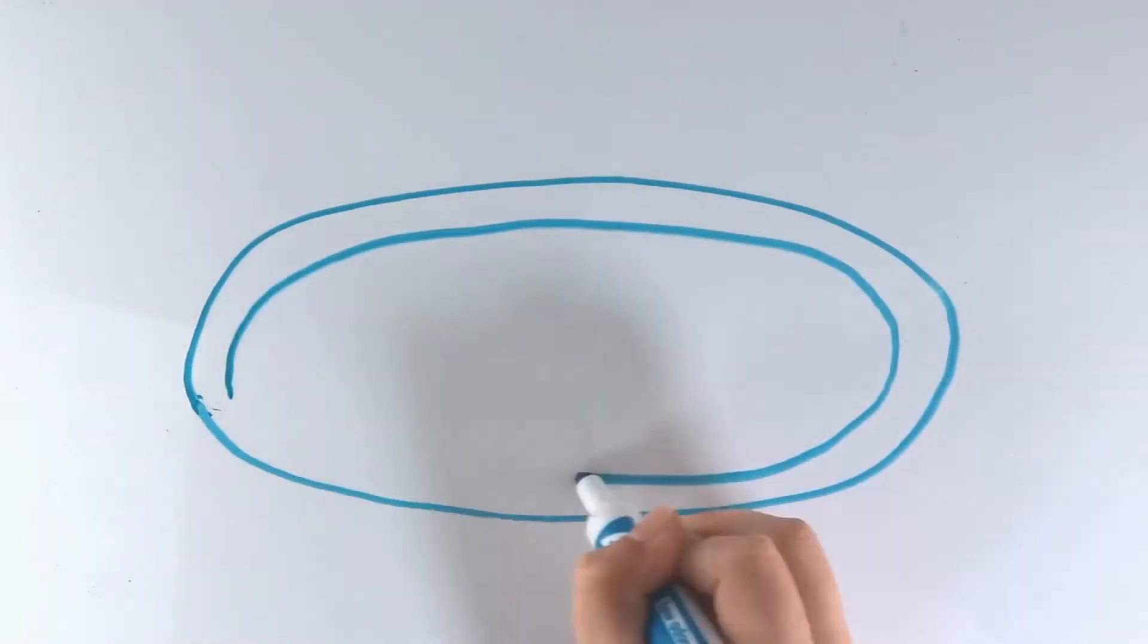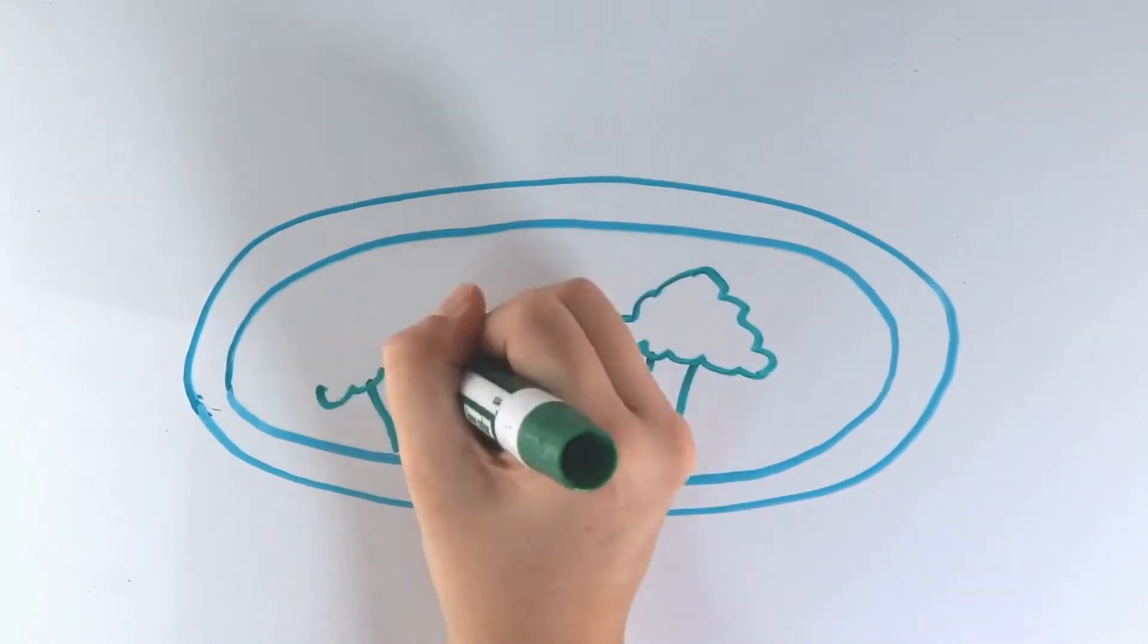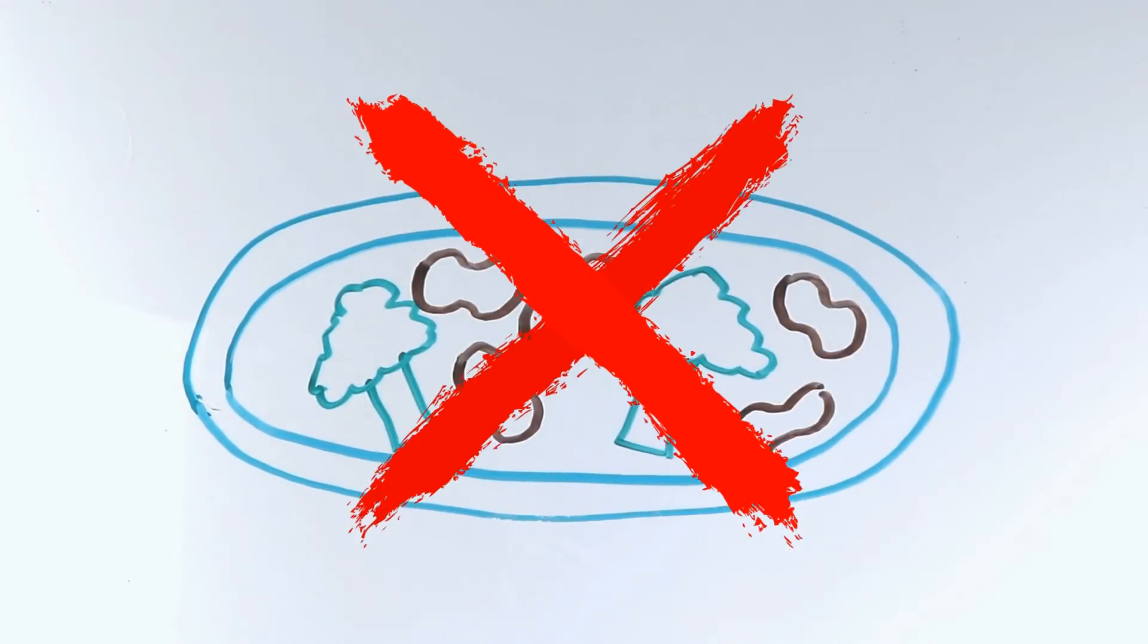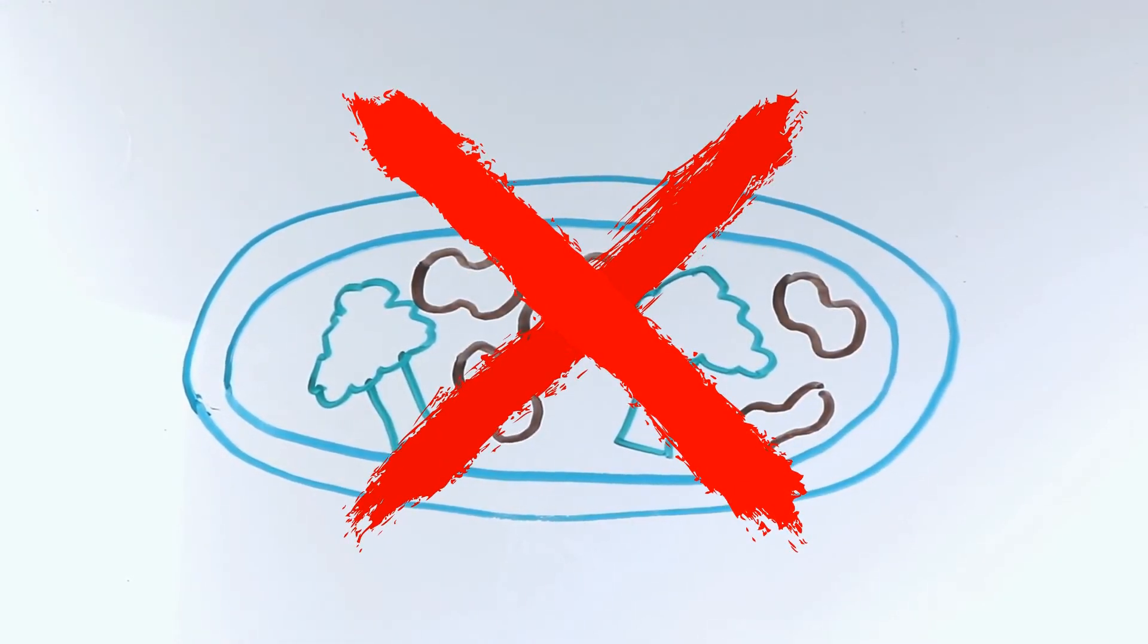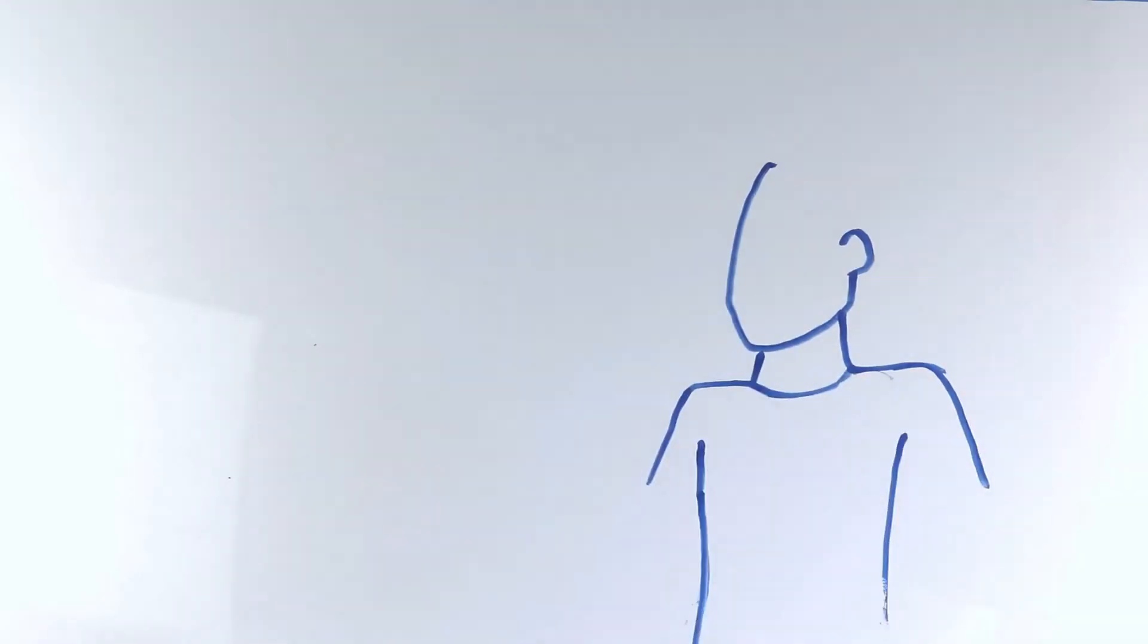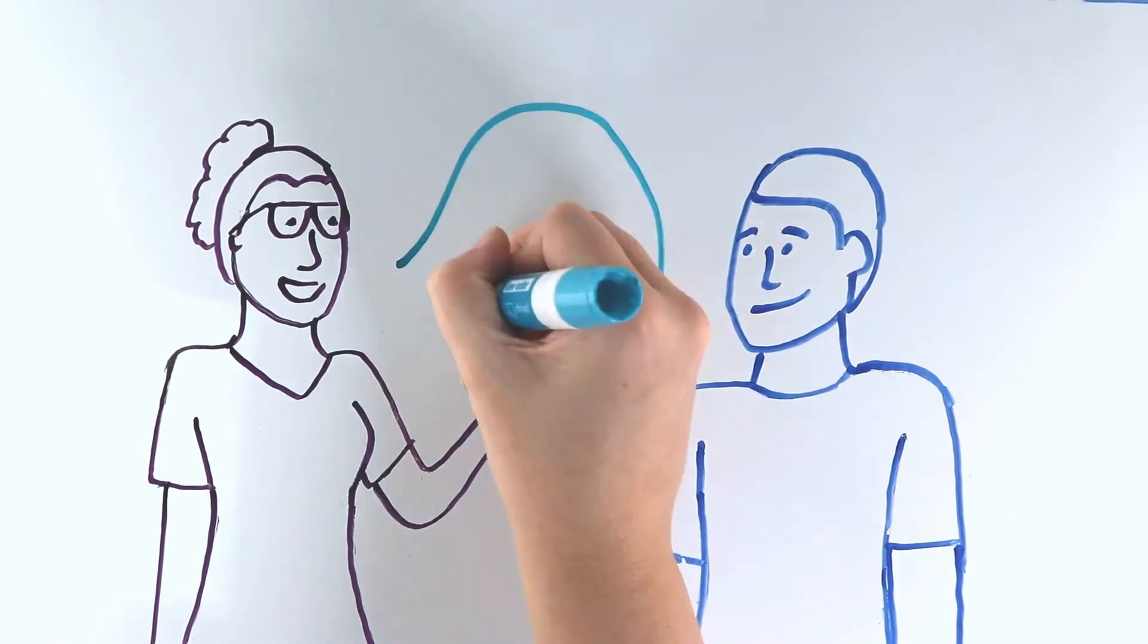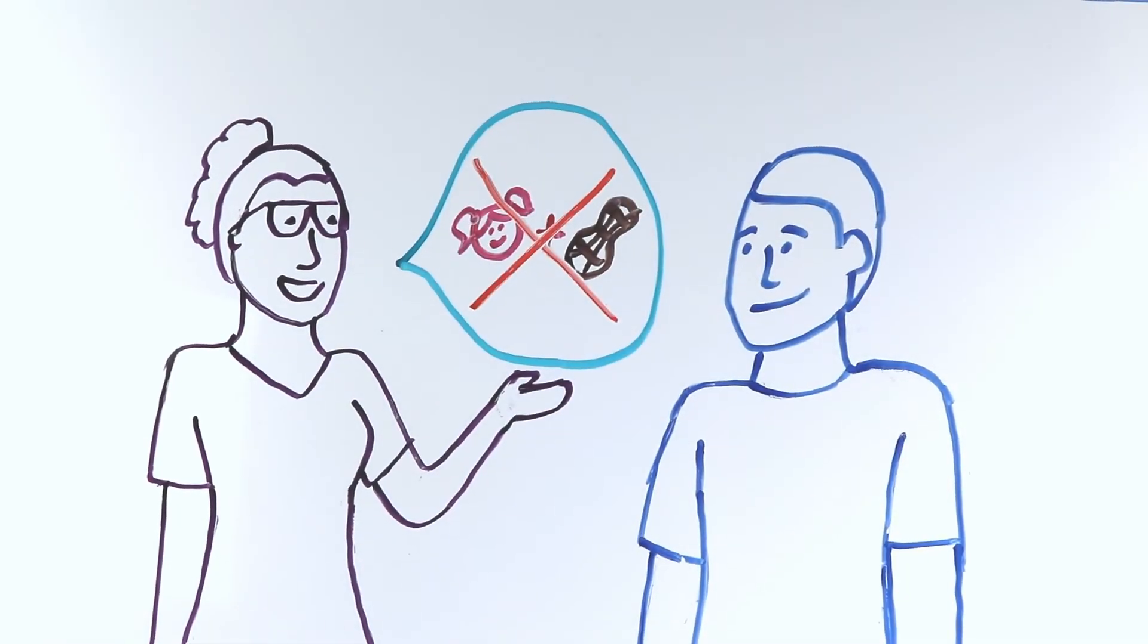Also, avoid cross-contamination by ensuring allergenic foods do not come in contact with other items in the classroom, such as surfaces, utensils, and other food items. Always check with families and your health or nutrition manager ahead of time to ensure new foods are safe for the children in your classroom.